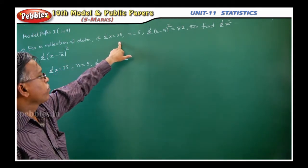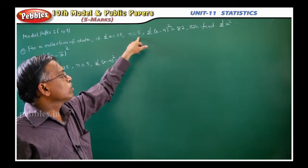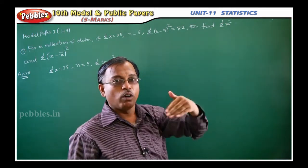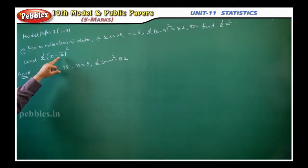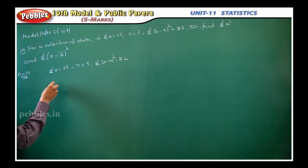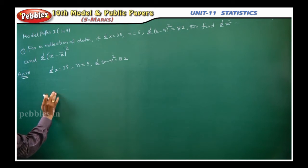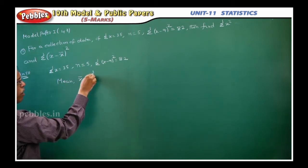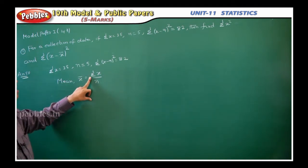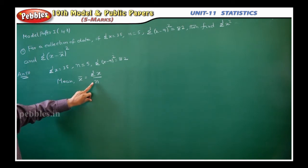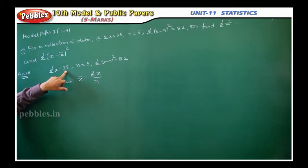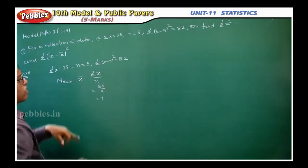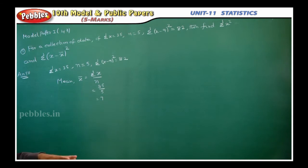Sigma x is given as 35, n (number of observations) is 5, and sigma (x minus 9) whole square is 82. Using this data, we need to find sigma x square and sigma (x minus x̄) whole square. First, since sigma x and n are given, we can find the mean. x̄ equals sigma x by n, that is 35 divided by 5, which gives x̄ equals 7.